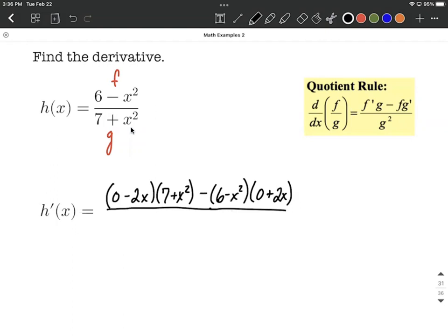For our denominator, it's going to be g squared. So we say 7 plus x squared, and then that gets squared. So we copy down the denominator g, and then we squared it.